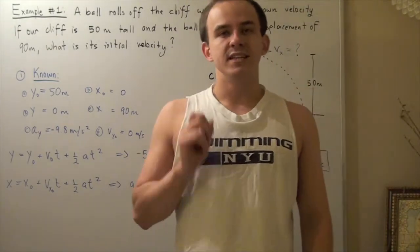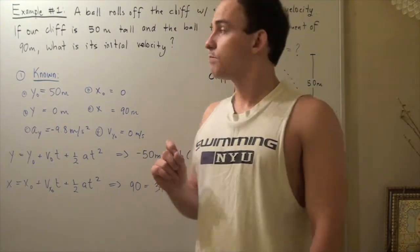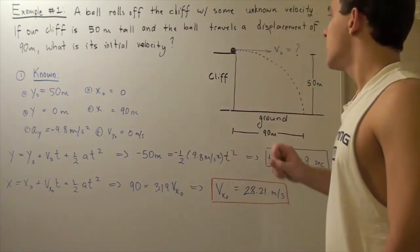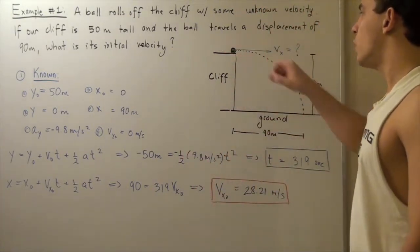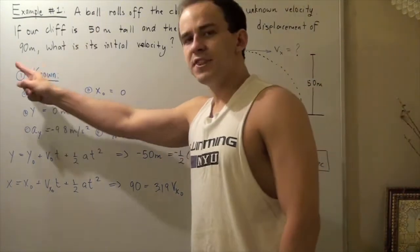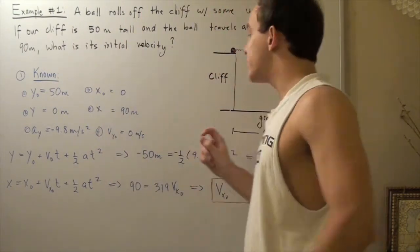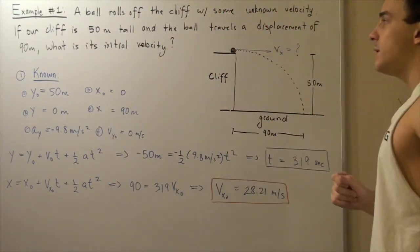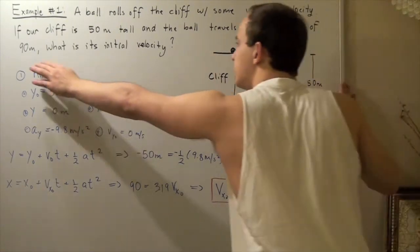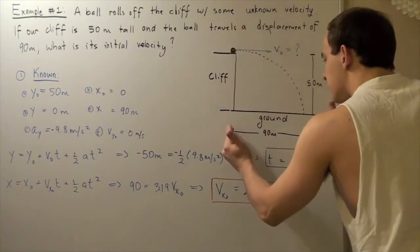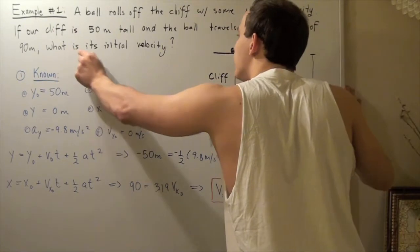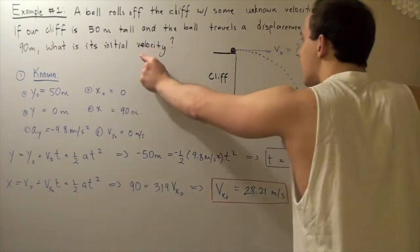Let's look at the following example that deals with projectile motion. A ball rolls off a cliff with some unknown horizontal velocity. Here's our ball rolling off the cliff with our unknown velocity along the x-axis. Now if the cliff is 50 meters tall, and the ball travels a horizontal displacement of 90 meters — from the point of the cliff to the point where the ball hits the ground — what is the ball's initial horizontal velocity?